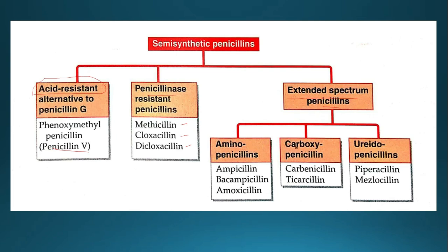The next class is extended spectrum or broad spectrum penicillin. First subclass is aminopenicillin — examples are ampicillin (the answer to that question), bacampicillin, and amoxicillin. Second is carboxypenicillin — examples are carbenicillin and ticarcillin. Third is ureidopenicillin — examples are piperacillin and mezlocillin. So penicillins are classified into acid resistant, penicillinase resistant, and extended spectrum penicillin.